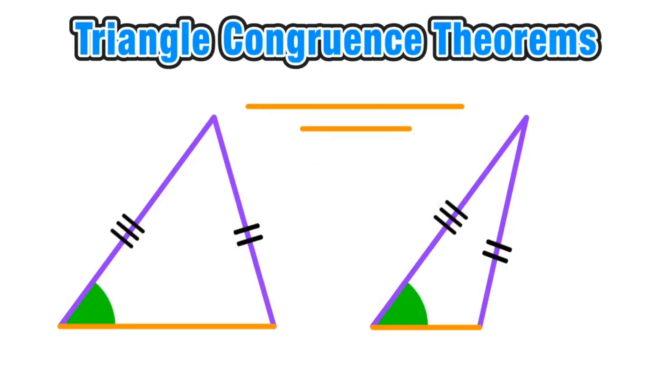So due to this ambiguity, angle-side-side or side-side-angle is not enough to prove that two triangles are congruent.